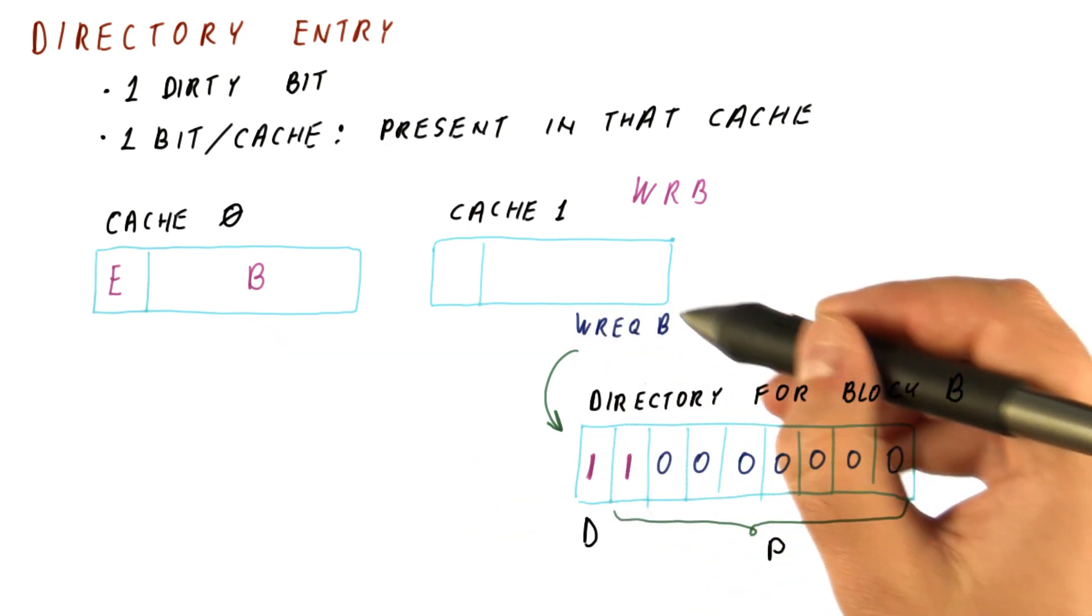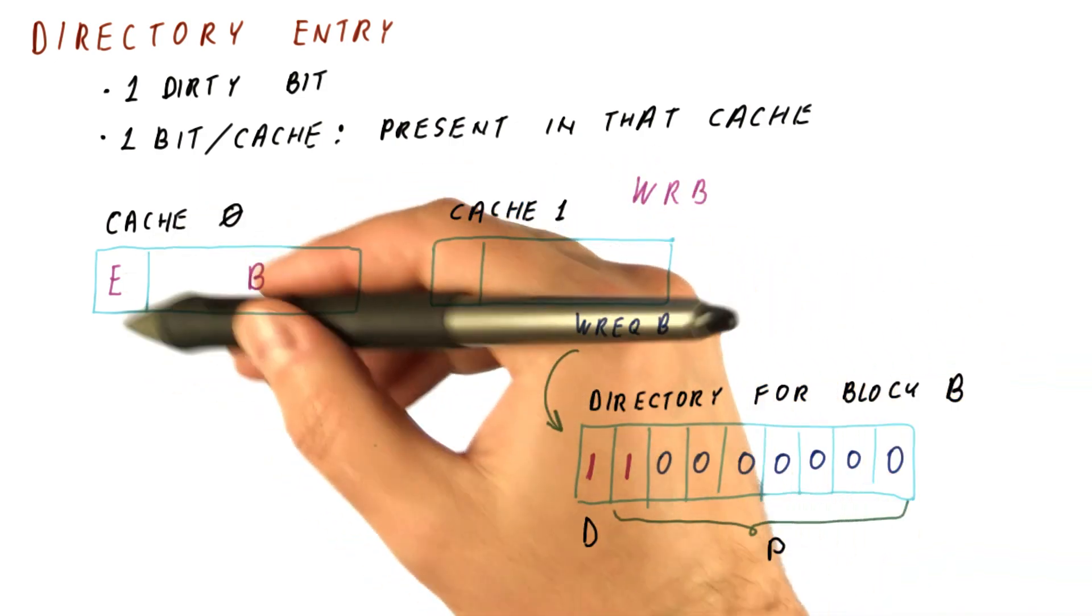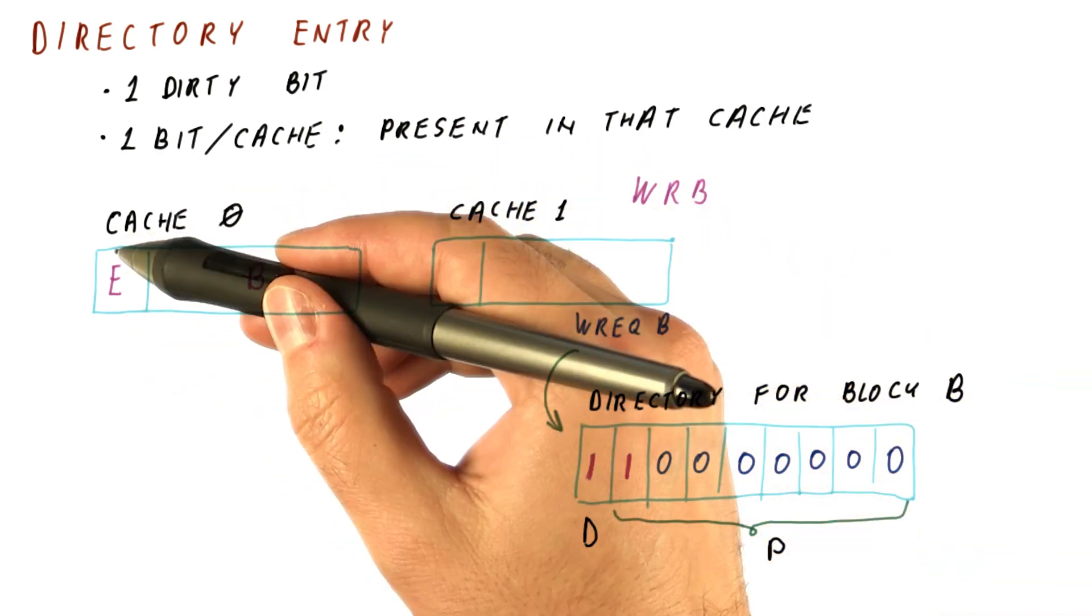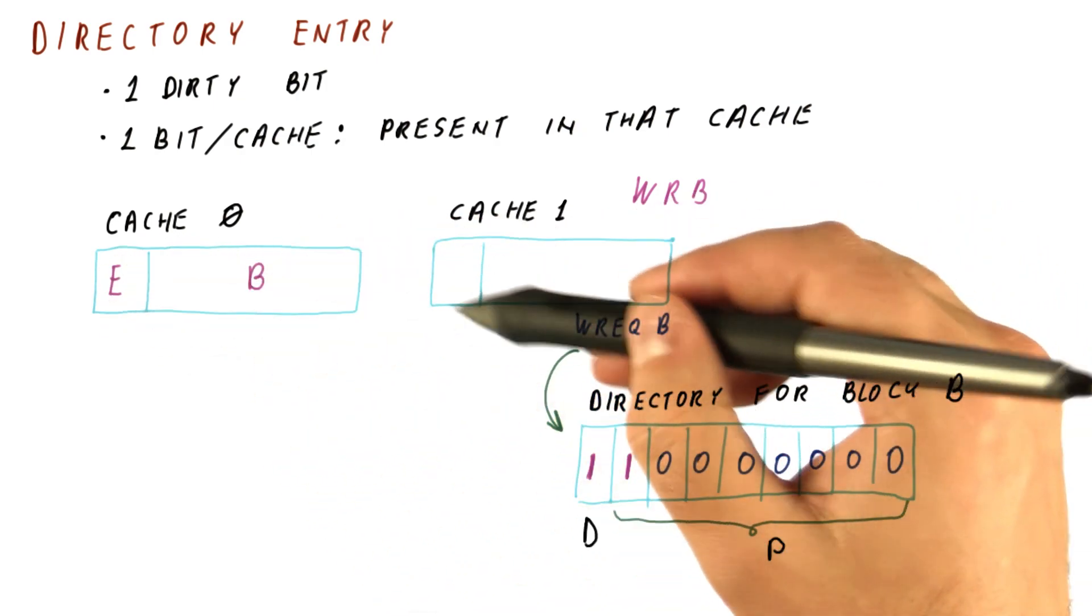So when this write request arrives here, again, this write request would be placed on the bus, seen by this cache. As a result, this cache would invalidate, and we would get the block in the modified state.